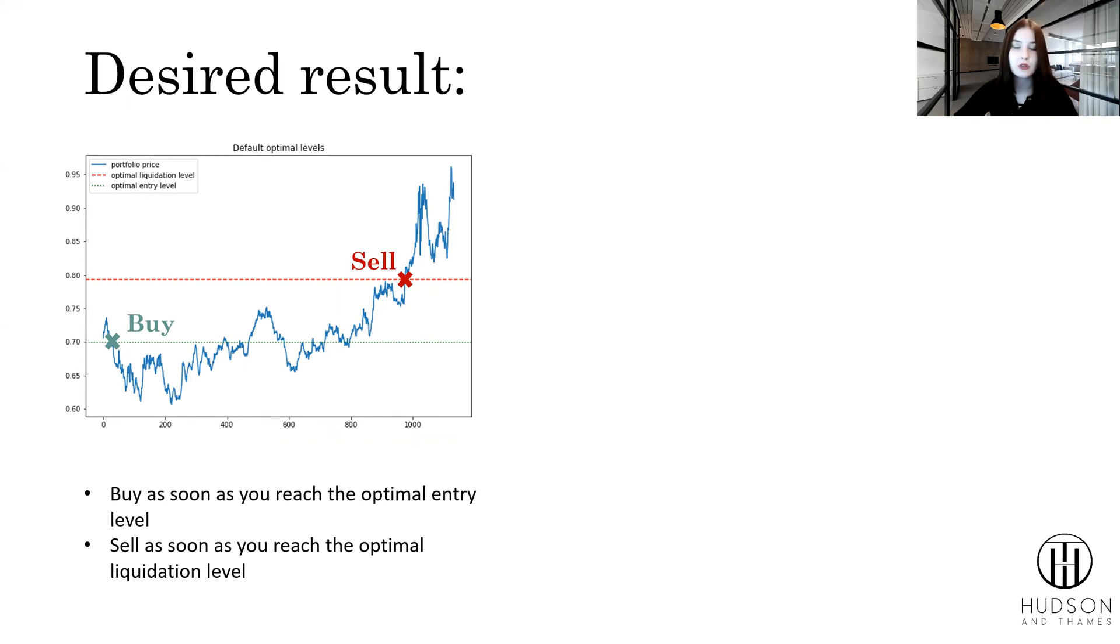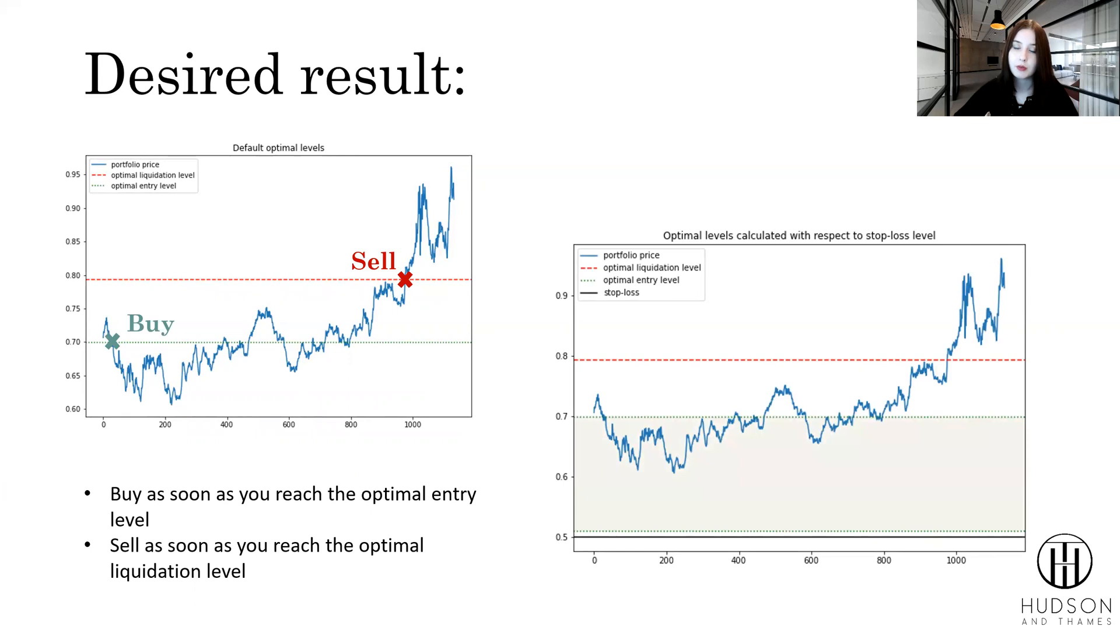Let's continue to the optimal stopping problem with the inclusion of stop loss. Here, our incentive is a little bit different. We buy as soon as we reach the bound of the optimal entry interval, and then we sell as soon as we reach the optimal liquidation level. But to get those results and our optimal levels, we need to proceed to the second part of our presentation, module functionality.